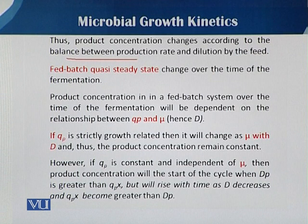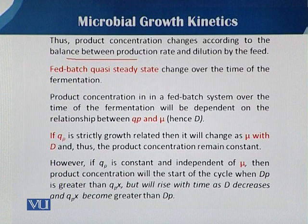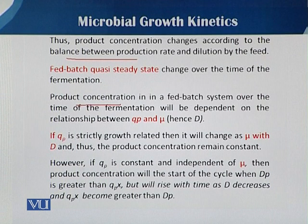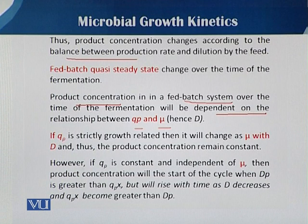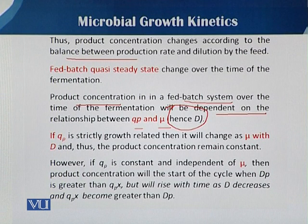If the fed batch quasi-steady state changes over the time of fermentation — meaning mu is not equal to D — then there is a drift in mu or D. If we cannot balance the production rate with the dilution rate, the steady state is disturbed. The product concentration in the fed batch system over time depends on the relationship between Qp and mu, which is the specific growth rate, and hence on D, the dilution rate.